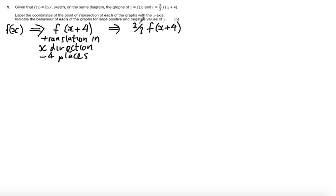Second transformation is a stretch because we're multiplying our function. It's outside the function so it's affecting our y values. This is a stretch parallel to y-axis with a scale factor. Because it's outside the bracket and we're working on the y values, it does exactly what it says, so we're going to have a scale factor of two thirds.